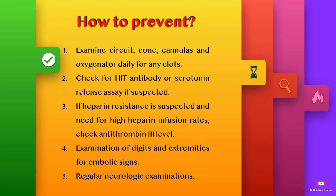How can we prevent this clotting? Examine the circuit, cannulas, and oxygenator daily for any visible clots. Check for HIT antibody or serotonin release assay if suspected. If apparent resistance or need for high heparin infusion rates is suspected, check antithrombin 3 levels. Examination of digits and extremities for embolic signs should be done, and regular neurological examinations must be conducted.